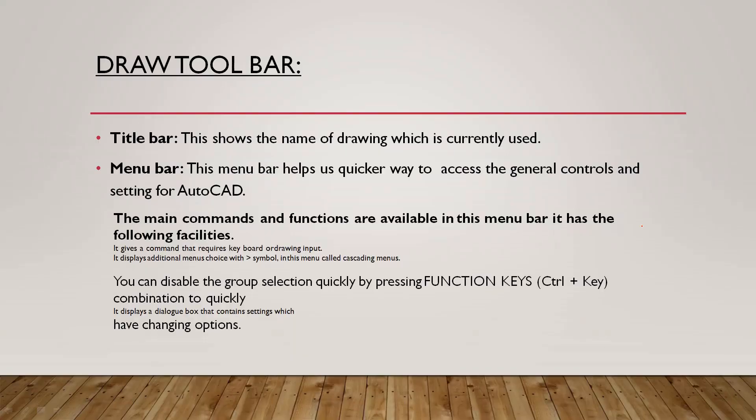Next is the draw toolbar. The title bar shows the drawing and project name. The menu bar contains the main commands and functions available in AutoCAD. You can use the menu bar for basic settings. Main commands and functions are available in the menu bar.